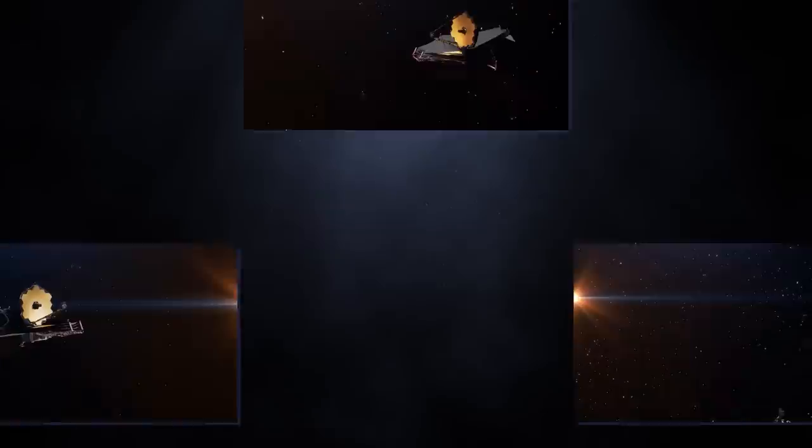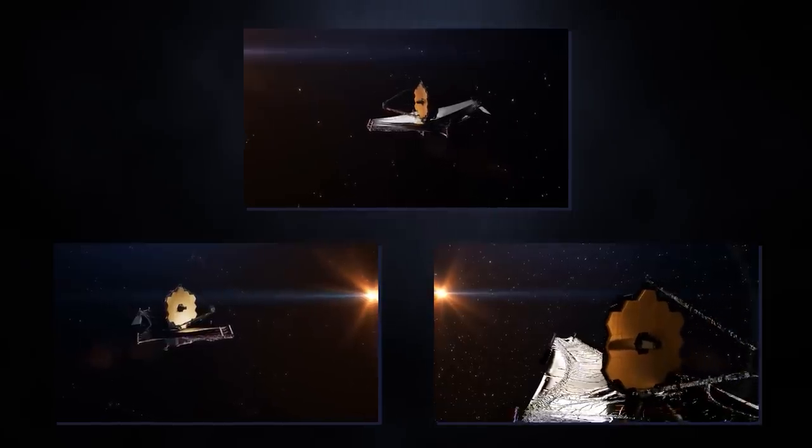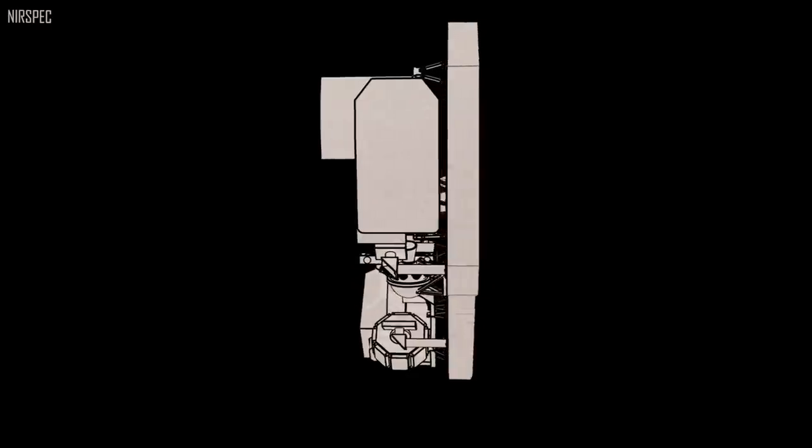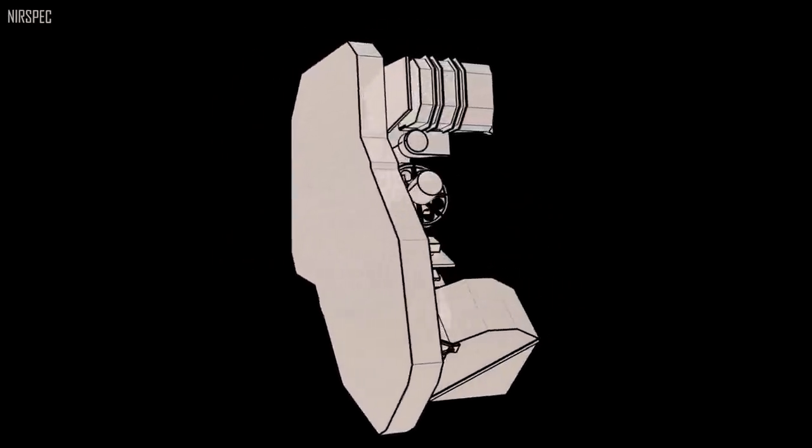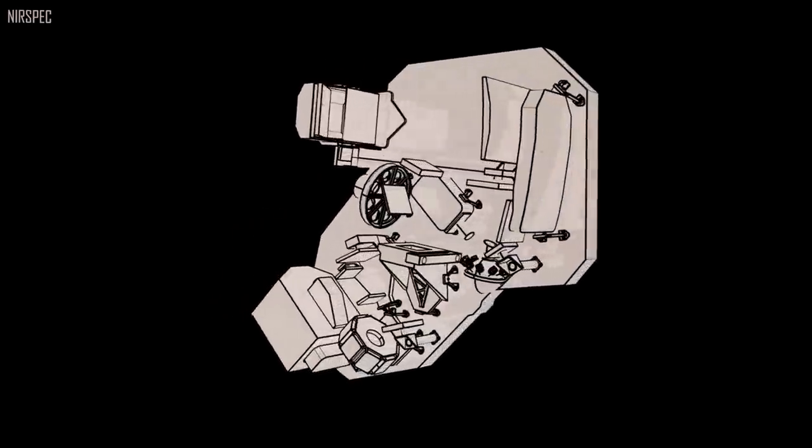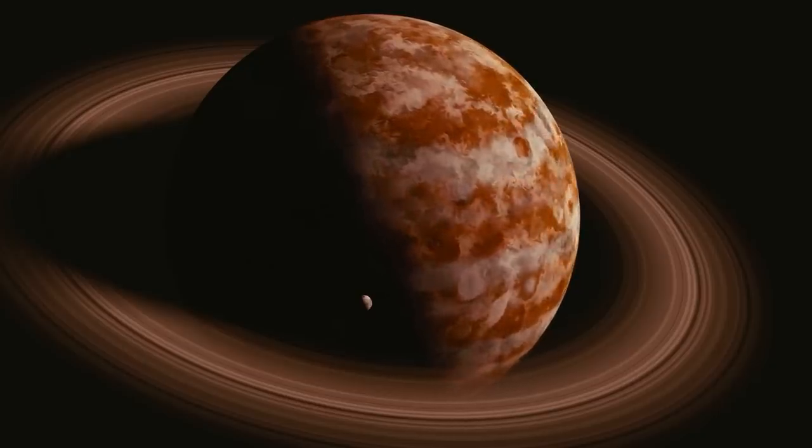Webb, however, changed the game by capturing the first direct image of an exoplanet in September 2021. This noteworthy occasion marked a giant leap forward in astronomy. The exoplanet, named HIP 65426b, was discovered in 2017, and getting a good look at it required using two of Webb's cameras, several filters, and the telescope's coronagraphs.